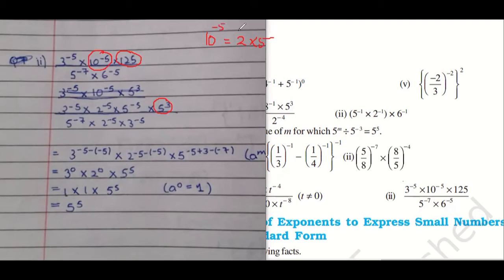So 10 power minus 5. So 10 power minus 5 is 2 into 5 power minus 5. So both will get the power as 2 power minus 5, 5 power minus 5. So very good, you have written this thing. Good.